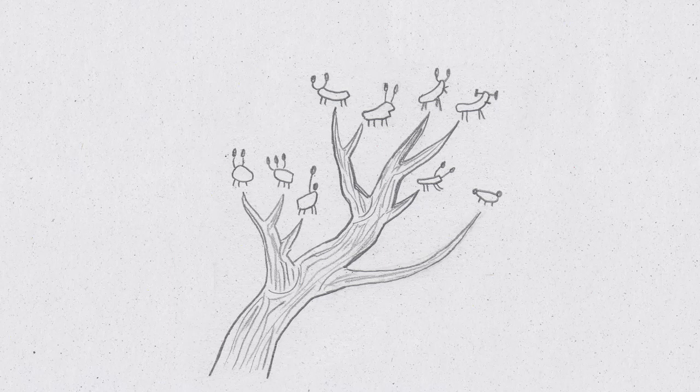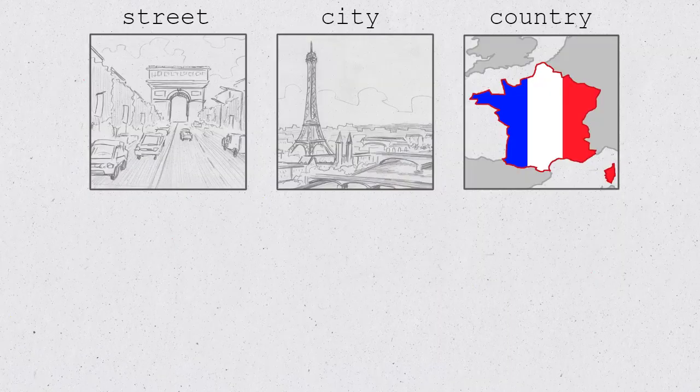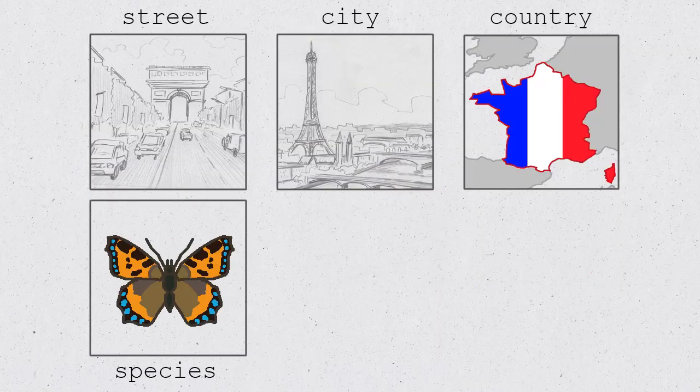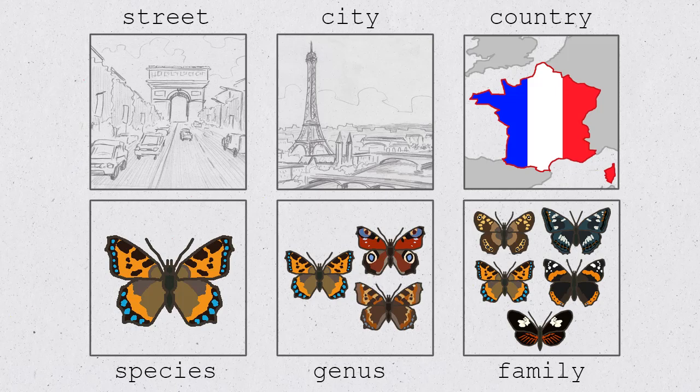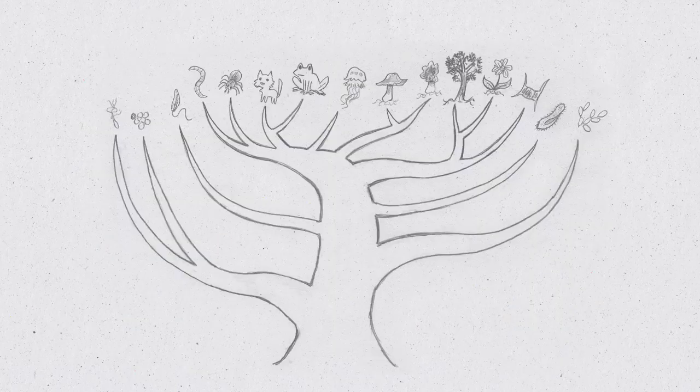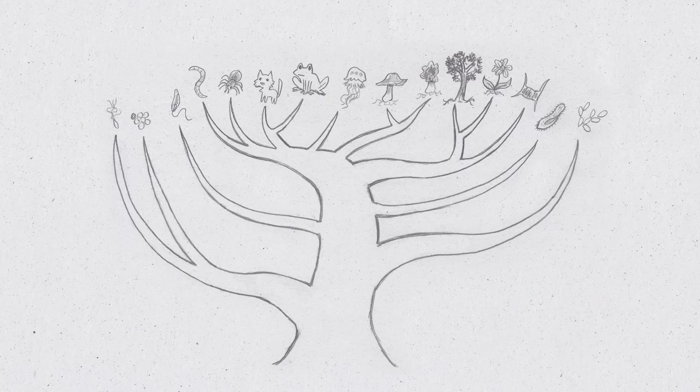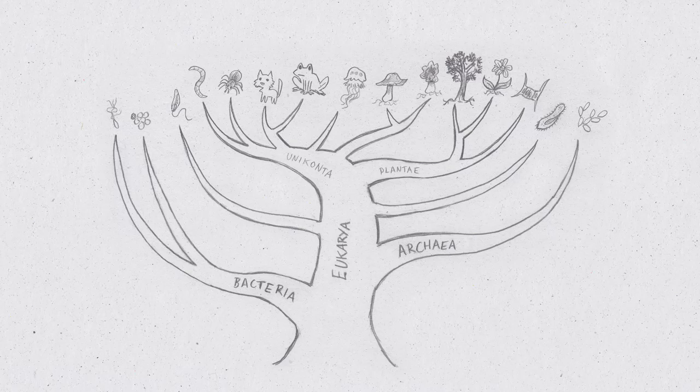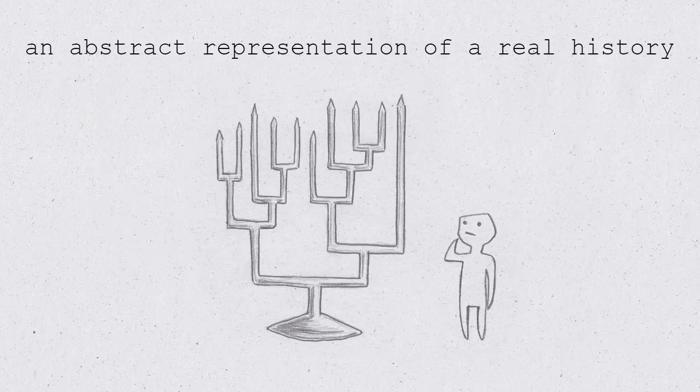So in taxonomy, then, we understand the diversity of life by dividing it up into bits and giving those bits names. Instead of street, city, and country, we have species, genus, and family. Instead of continents, the thing that we're dividing up and naming is the gigantic evolutionary family tree of all living things. And, like in geography, while the names that we give are arbitrary, the tree of life is real, as in it's an abstract representation of a real history. And it only has one particular shape.